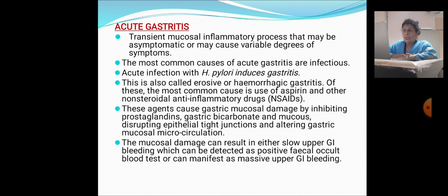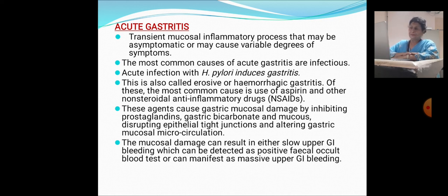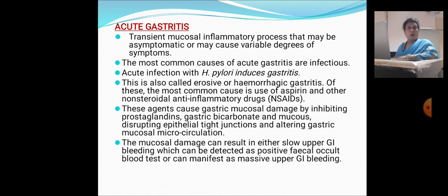The most common cause of erosive or hemorrhagic gastritis is the use of aspirin and other non-steroidal anti-inflammatory drugs. These agents cause gastric mucosal damage by inhibiting prostaglandins, gastric bicarbonate, and mucus, disrupting epithelial tight junctions, and altering gastric mucosal microcirculation. The mucosal damage can result in either slow upper GI bleeding detectable as positive fecal occult blood test or can manifest as massive upper GI bleed.